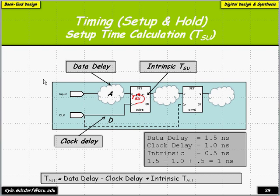Now let's look at an example where we calculate the setup time of the circuit. The setup time referred to previously is the intrinsic setup time — that is the characteristic or parameter of the flip-flop itself. We're going to look at setup time from an input-to-register perspective. There is some associated data delay that our input must go through, a clock delay, and then our intrinsic setup time. Our data must arrive sometime before the next clock edge to meet the intrinsic setup time.